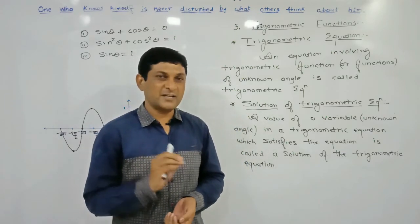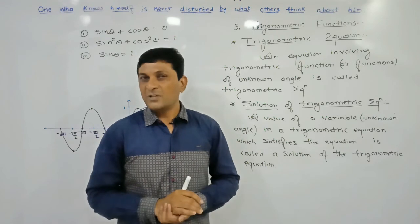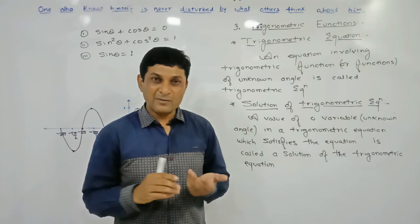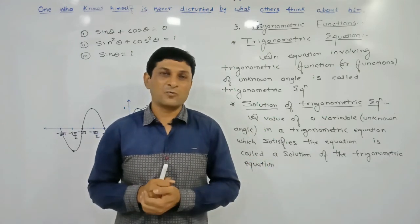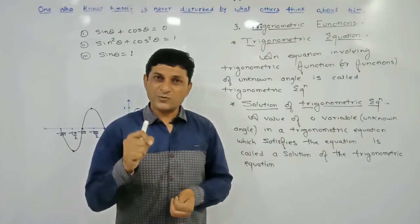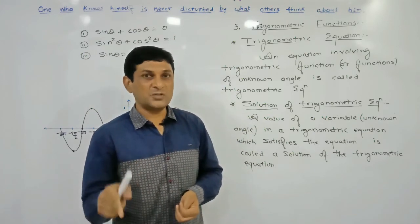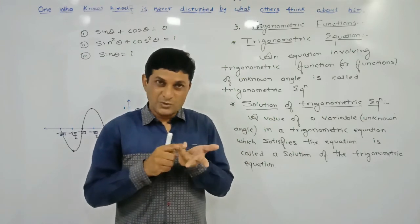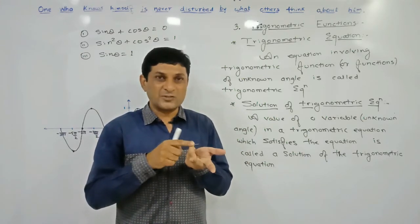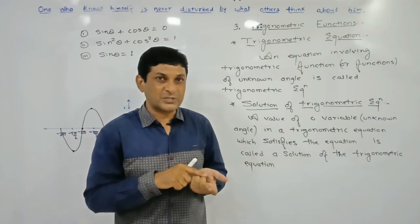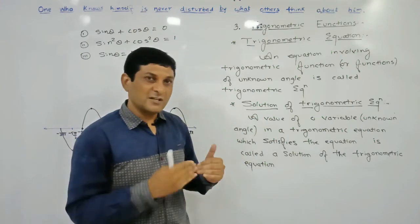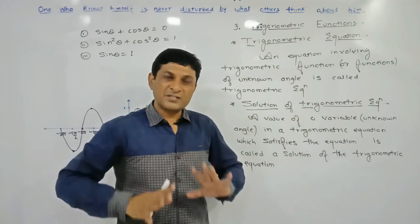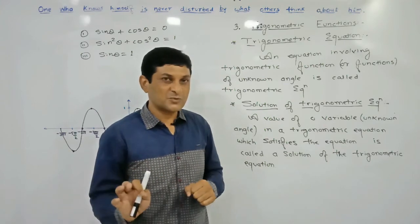Whenever we studied linear equations, quadratic equations, or equations in Class 10, by solving them we found the value of the variable which satisfies the equation. Such values are called the solution of that equation, or the root of the equation, or the zero of the equation. Here also we are finding the solution of a trigonometric equation.